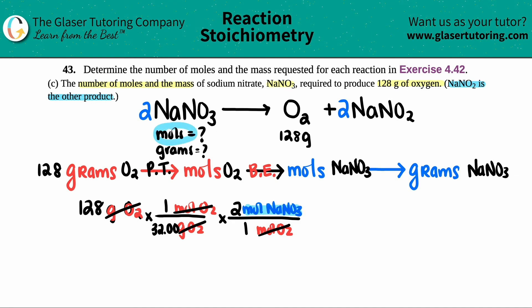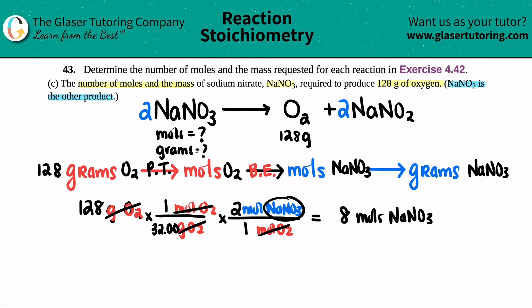Now I can cancel the moles of O2 unit and calculate the moles of NaNO3. Doing it all in one shot: 128 divided by 32, times 2, gives us 8. So we have 8 moles of NaNO3. That's the first answer.